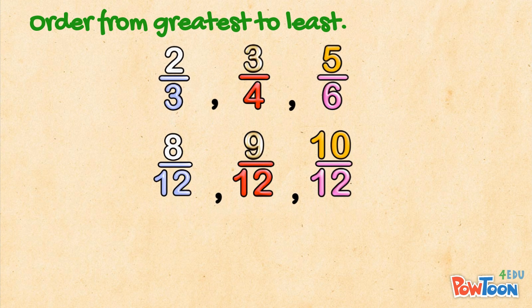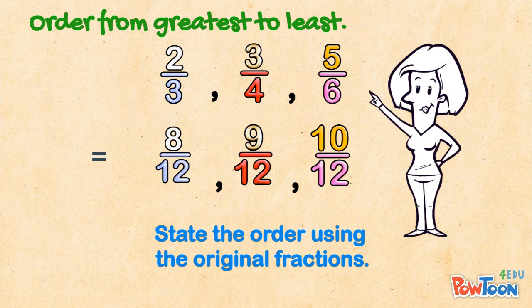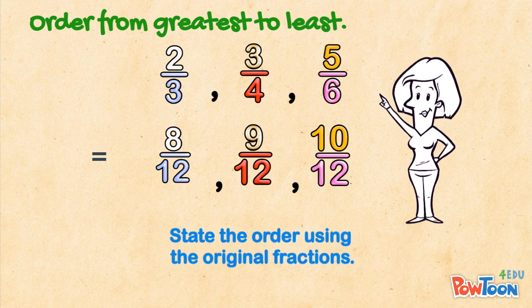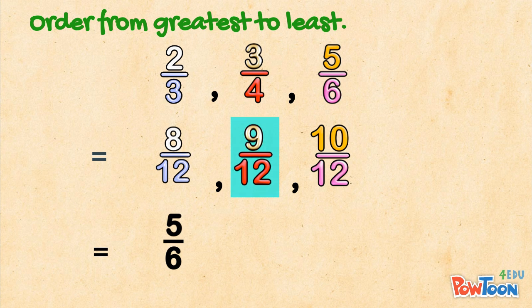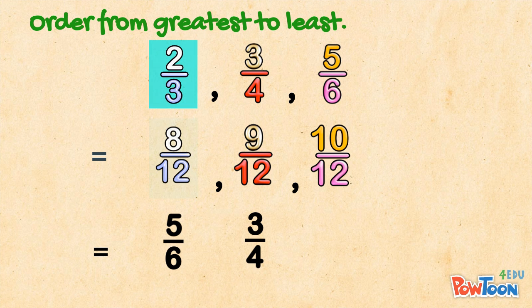And remember to state the order using the original fractions, not the equivalents, OK? The greatest fraction is 10 twelfths, which is 5 sixths. Then 9 twelfths, which is 3 quarters. Then 8 twelfths, which is 2 thirds.